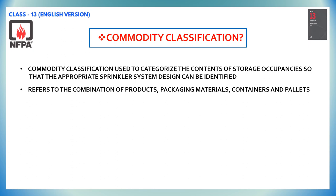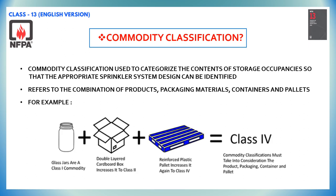In order to understand this, let us have a look at an example. We have glass jars stored in a double-layered cardboard box with cardboard dividers, and it is sitting on a reinforced plastic pallet. Even though the glass jars are only a class 1 commodity, the cardboard box and plastic pallet increases the fuel load so that it should be considered a class 4 type.